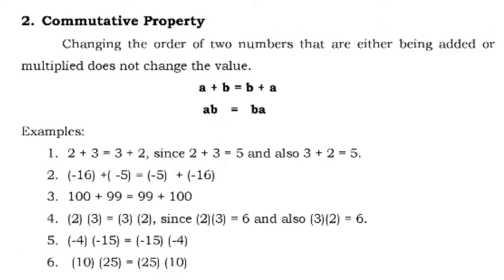For number 2, the commutative property: changing the order of two numbers that are either being added or multiplied does not change the value. So if we have A plus B, this is just equal to B plus A — you can interchange the two. For multiplication, A times B is just the same as B times A. For example, 2 plus 3 equals 3 plus 2, since 2 plus 3 equals 5 and 3 plus 2 is also equal to 5.